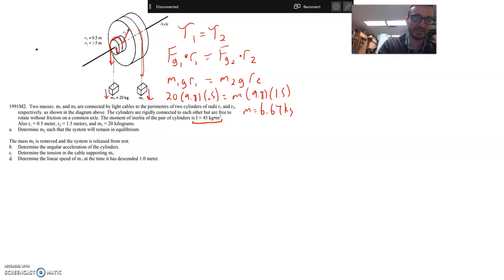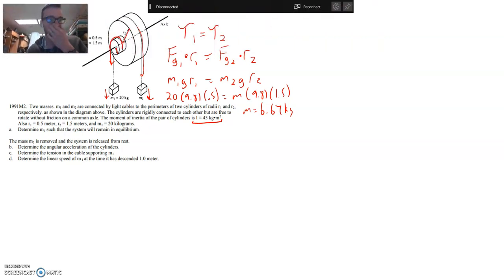a.k.a. balanced torques. Now, here's where things get interesting. The next part of the question is saying mass two is removed. So, like, adios, the only thing acting on the system is M1 now, and that's, of course, an unbalanced torque. And it says determine the angular acceleration of the cylinders. So our goal here, and this is going to be a big one folks, our goal here is to get alpha, the alpha.